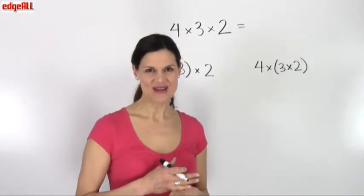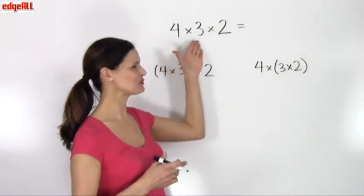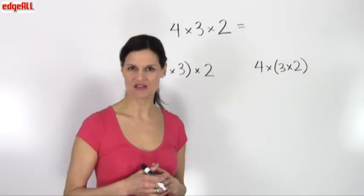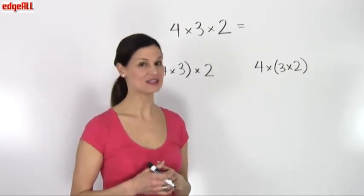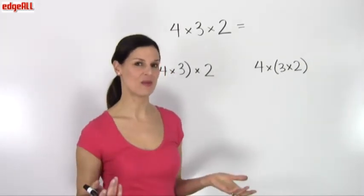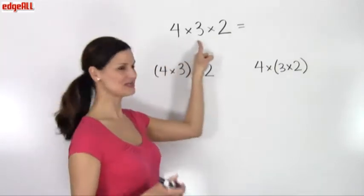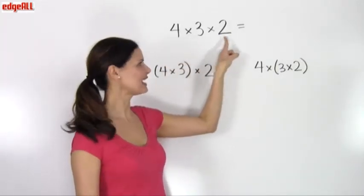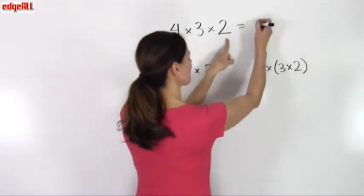So if I look at this example 4 times 3 times 2, the associative property of multiplication tells me that I can either multiply 4 times 3 first, which equals 12, and then multiply that by 2, which equals 24.